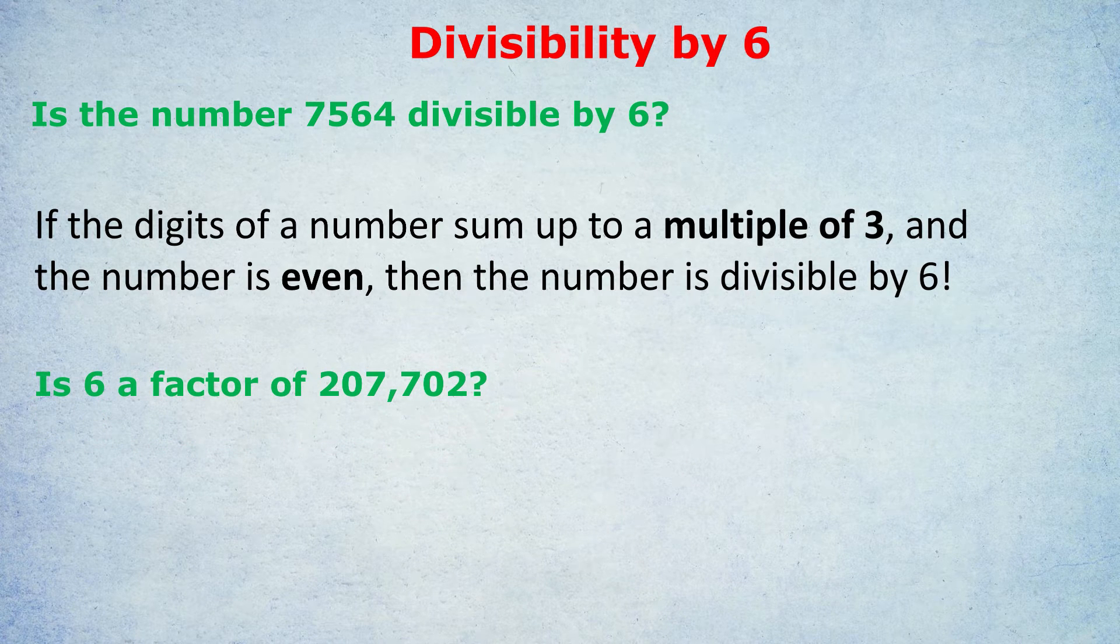Is 6 a factor of 207,702? If you want, pause the video, try and work this one out. Notice again, I've phrased the question slightly differently, asking whether 6 was a factor, but it's the same thing. Is it divisible by 6? Adding up the digits of 207,702, we get, I believe, 18. Now 18 is a multiple of 3. Therefore, we know that big chunky number is divisible by 3. And we also know it's even because its last digit is 2.